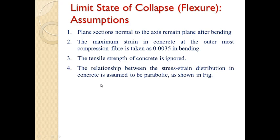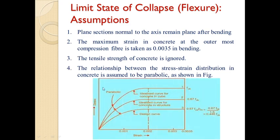The next assumption concerns the relationship between stress and strain distribution in concrete, which is assumed to be parabolic. The maximum compressive stress curve in the structure is obtained by reducing the top parabolic curve in two stages: first, dividing by 1.5 due to the size effect, and second, dividing again by 1.5 considering the partial safety factor for material. These middle and bottom curves represent these two stages respectively.